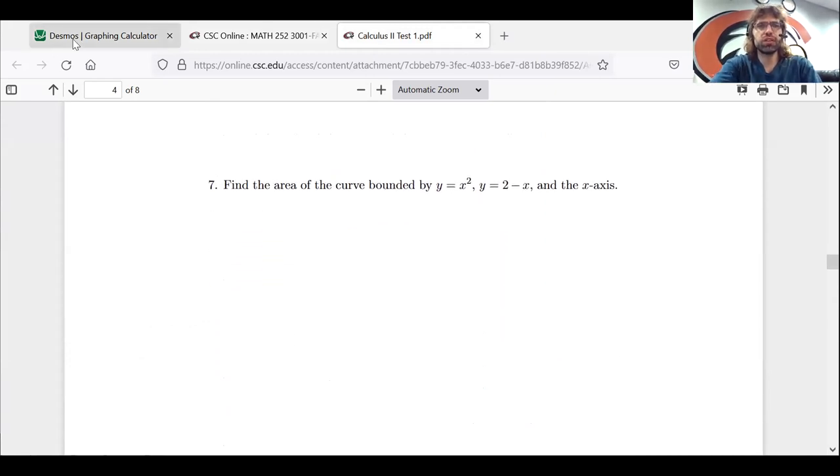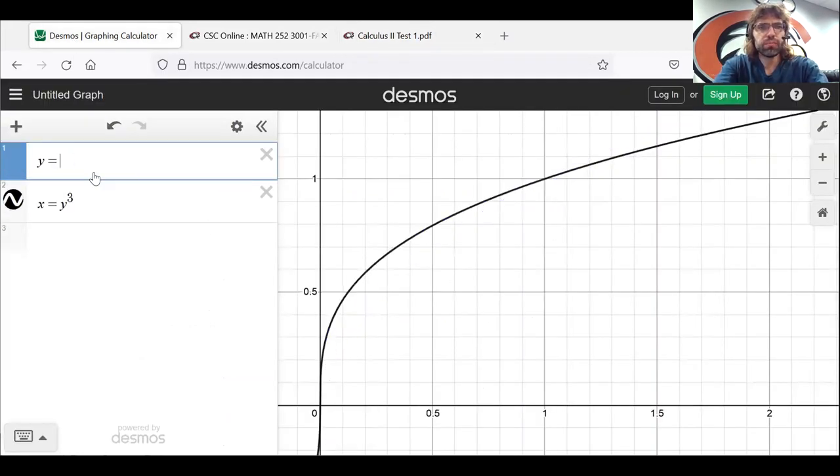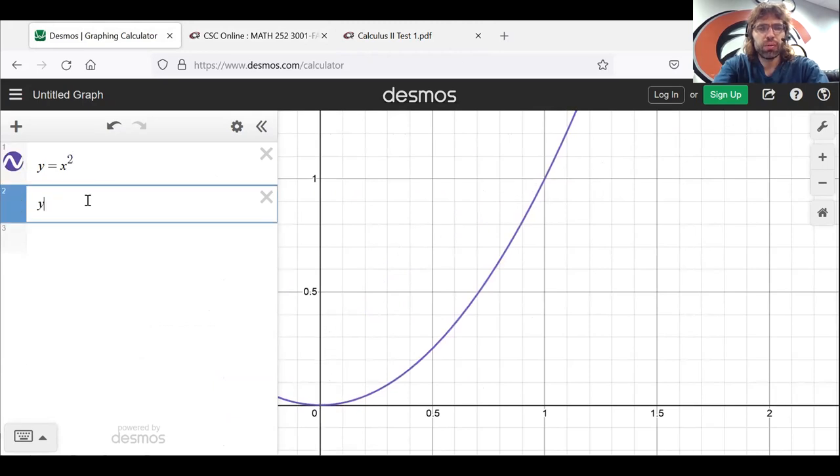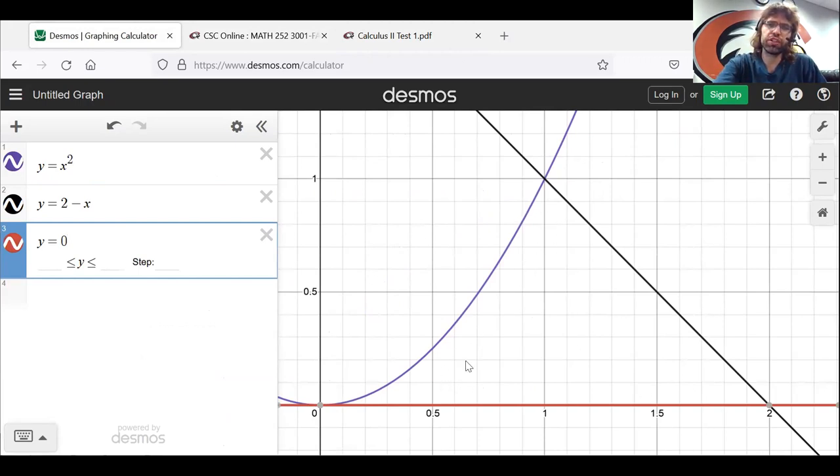The next problem is this. And if you go to Desmos and look at these: y equals x squared, y equals two minus x, y equals zero. This is the region we're looking at.